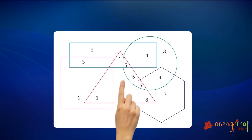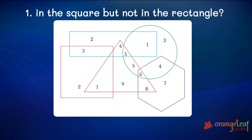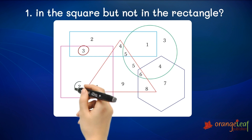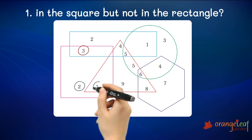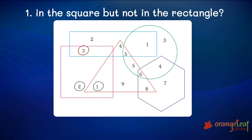What is the sum of the numbers in the square but not in the rectangle? There are three numbers in the square and there is one number which is in both the square and the rectangle. So if you remove three, we have two and one. Two plus one is equal to three. So the answer is three.